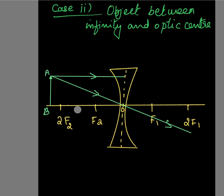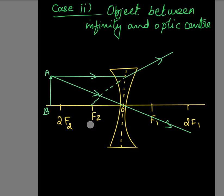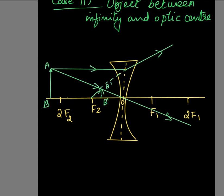When a ray parallel to the principal axis strikes a concave lens, it diverges in such a way that it appears to come from the focus F2. After refraction, the ray diverges and appears to originate from the second focal point F2. The position of the image is found by the intersection of the ray through the optic center and the back-traced refracted ray. The image A'B' is drawn at that intersection point, shown with dotted lines since it is virtual.